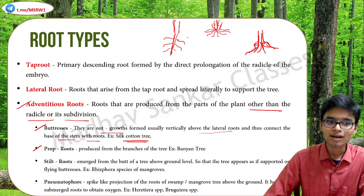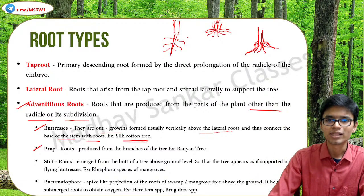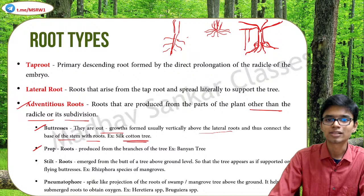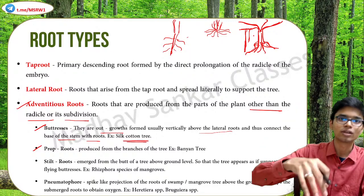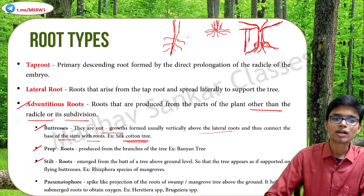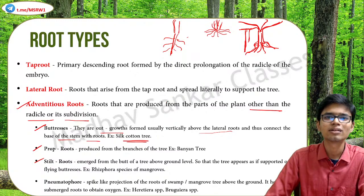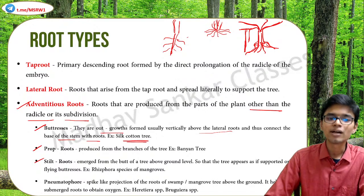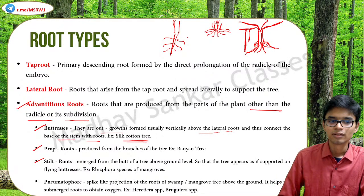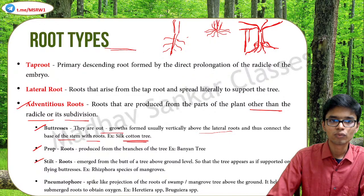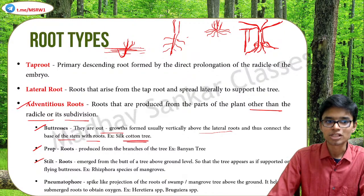Prop roots are produced by branches of the tree like in a banyan tree - you have some hanging structures that initially hang down and finally reach the ground and get fixed into it. Stilt roots are mostly seen in mangroves - they emerge from the bud of a tree above the ground level. In mangrove areas where water is fully salty, the root will rise up like spines into the air for absorbing oxygen. Such an adaptation is known as stilt root. Pneumatophores are spike-like projections of the roots of swamp or mangrove trees above the ground, also for absorbing oxygen in saline areas.